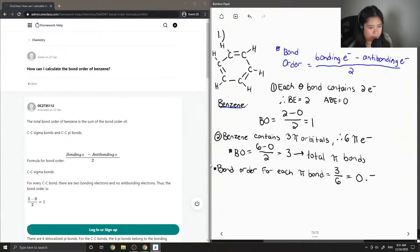So this bond order is 0.5 and now the third part, I'll just put it both together. The total bond order for each carbon-carbon bond is 1 plus 0.5, which is 1.5.